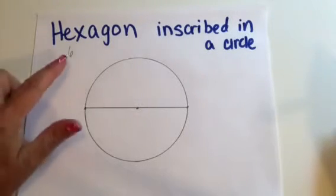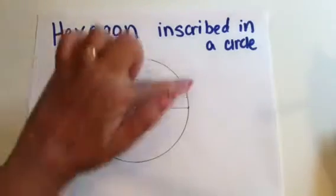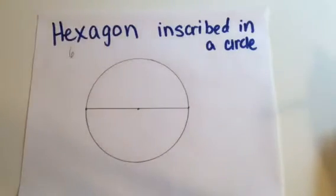Remember, a hexagon has six sides, so we need six vertices along the circumference of the circle to be able to connect them to create our hexagon.